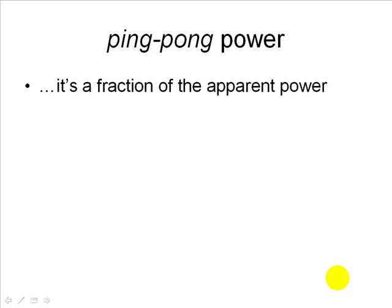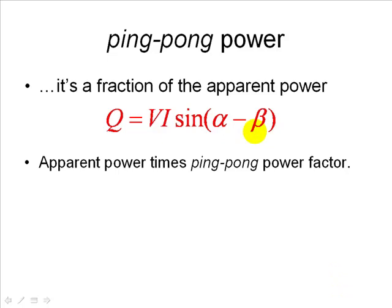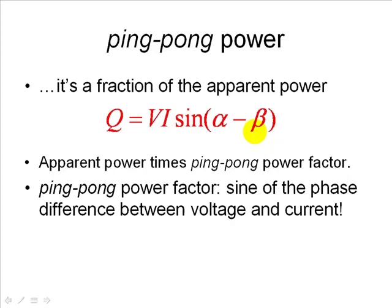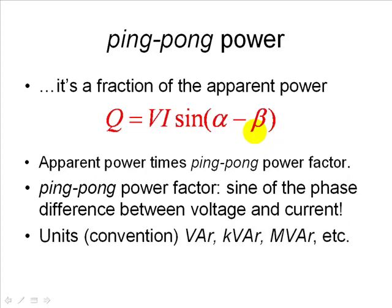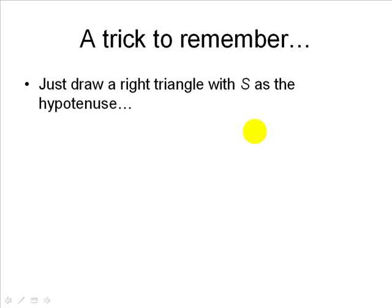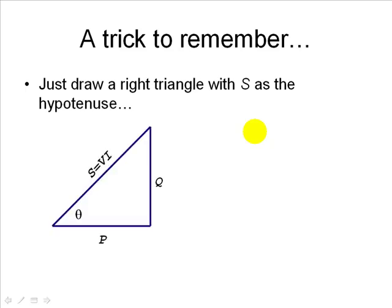The reactive power Q is a fraction of the apparent power: apparent power multiplied by the sine of the power factor angle — the phase difference between V and I. A useful mnemonic is the power triangle: draw a right triangle where S (apparent power) is the hypotenuse, P (active power) and Q (reactive power) are the two sides, and the power factor angle theta (alpha minus beta) is the angle between S and P.